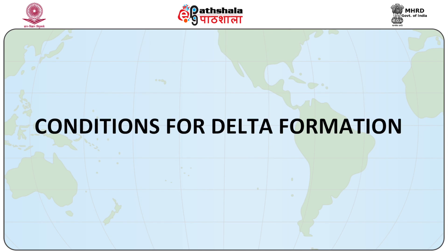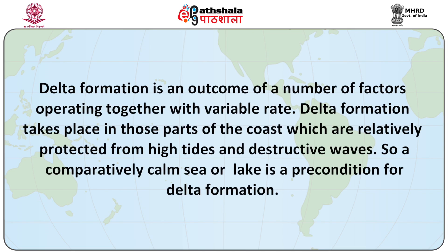There are certain conditions for delta formation. Delta formation is an outcome of a number of factors operating together at variable rates. Delta formation takes place in those parts of the coast which are relatively protected from high tides and destructive waves, so a comparatively calm sea or lake is a precondition. The second important factor is the presence of abundant load in the stream which can settle at the mouth of the river. The rate of deposition of bed load should exceed the rate of its destruction. Delta is not a stable feature and is regularly modified by waves, which often redistribute the deposited material at different places along the coast. Fluctuations in the volume of water and the amount of load a river carries also cause modification in the shape and extent of the delta. Therefore, there is no uniformity in the shape and size of deltas across the world, though arcuate delta is very commonly observed.